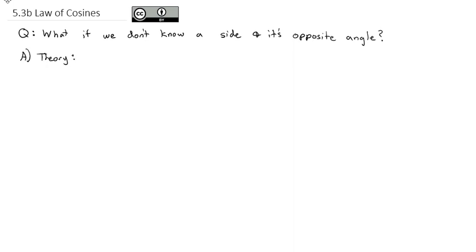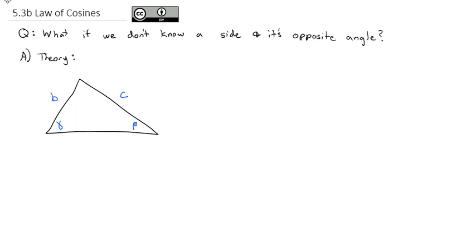Let's look at the theory behind what we have — very similar to last time. We're going to start off with a triangle. I'm going to call the left side angle gamma. Across from gamma is side C, because C is the third letter of the alphabet and gamma is the third letter of the Greek alphabet. The right side I'll call beta, with opposite side B. The top angle is alpha, and the side opposite it is A.